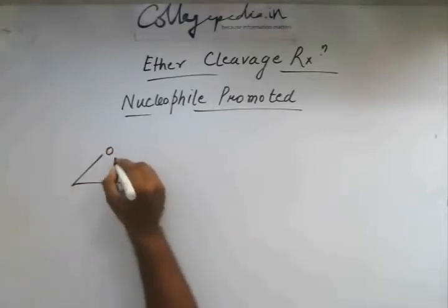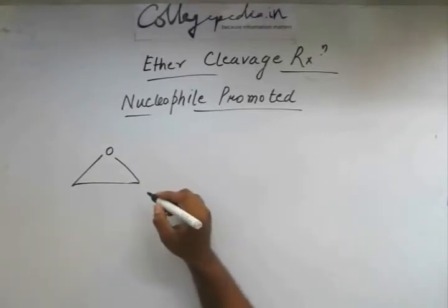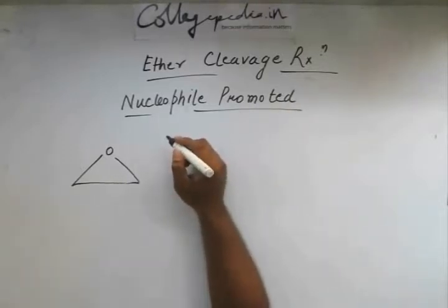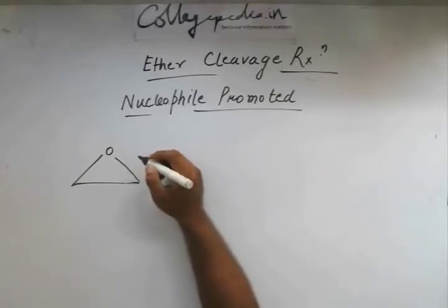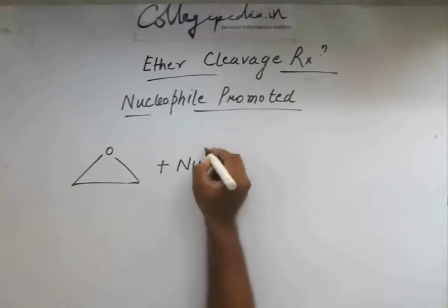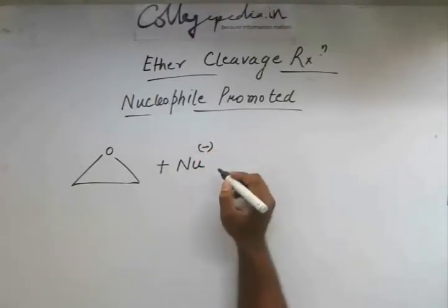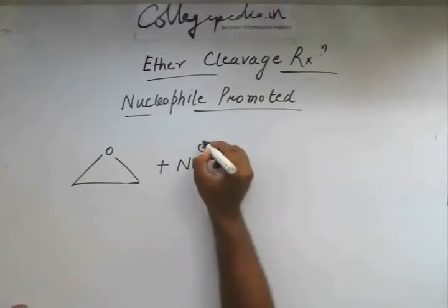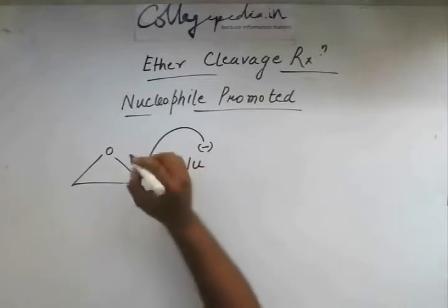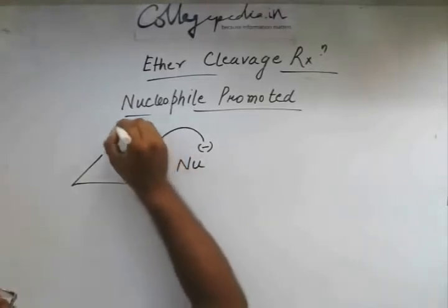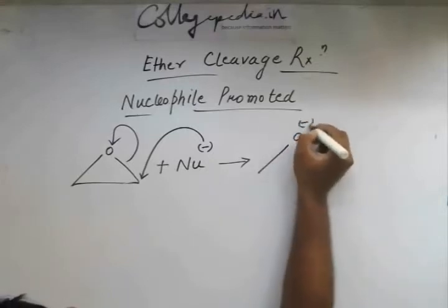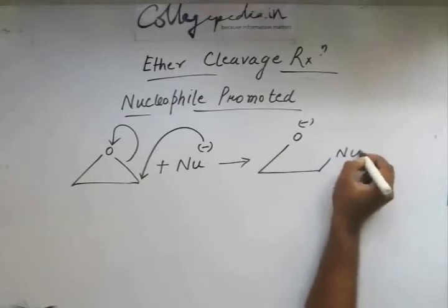We take a simple cyclic ether. In the previous class we saw that when the ether cleavage reaction was promoted by an acid, the H+ ion used to attack on the oxygen of the cyclic ether. In this class we will see what happens when a nucleophile attacks on the ether. This nucleophile attacks on the electrophilic carbon center, and one bond of the carbon is cleaved — we are left with O minus and the nucleophile attached.